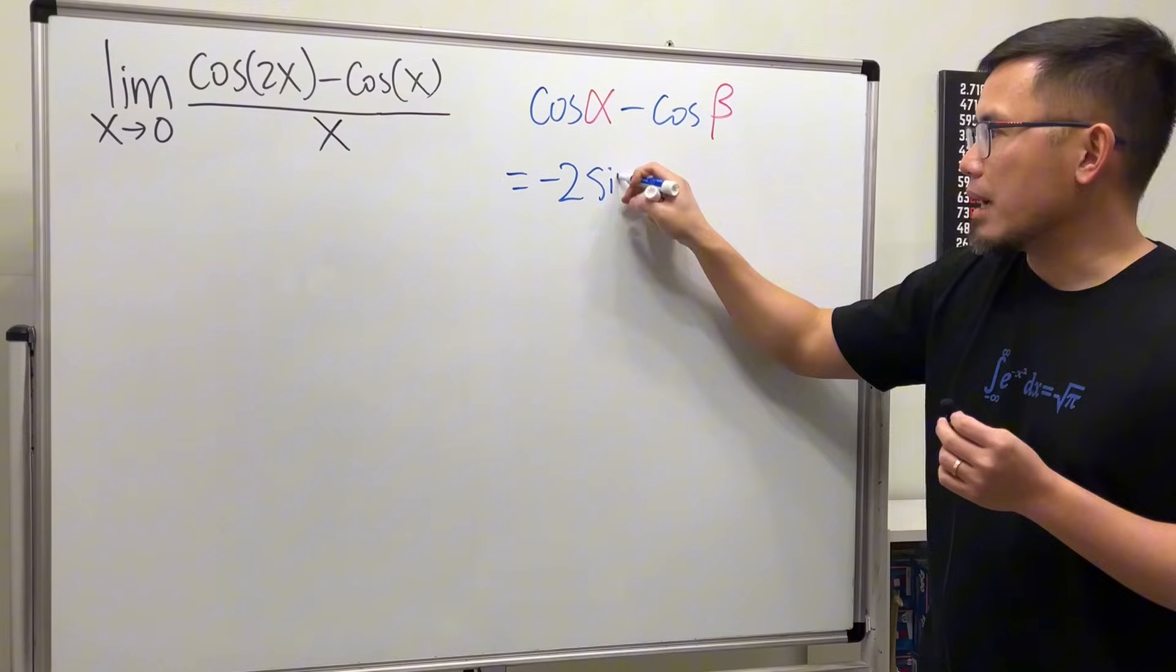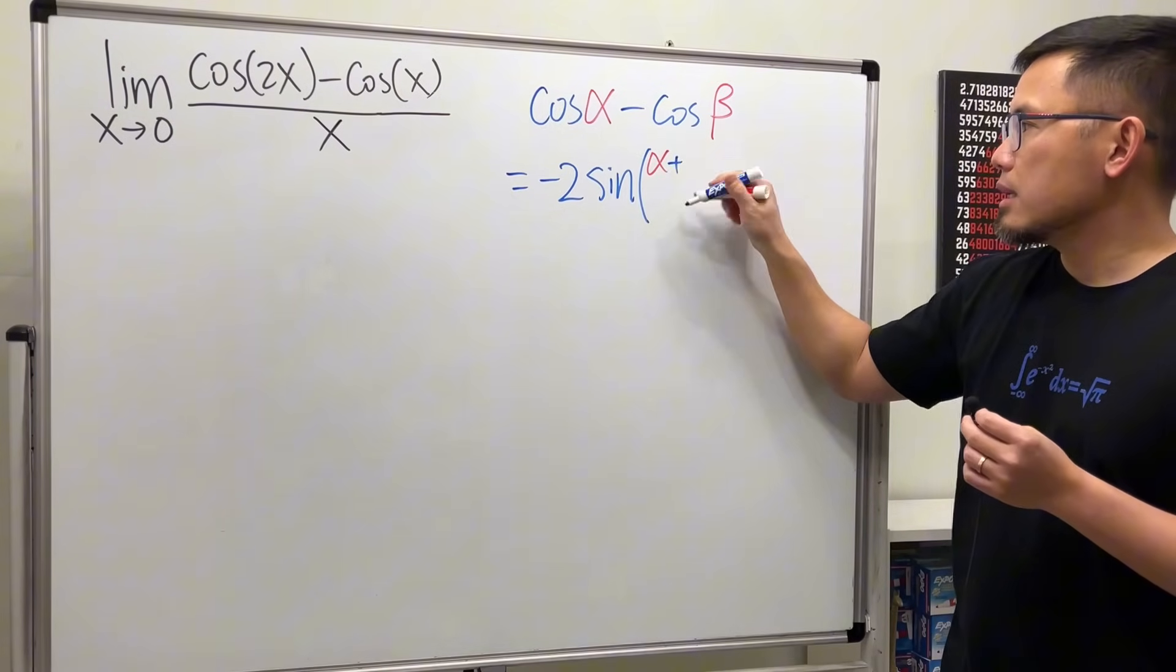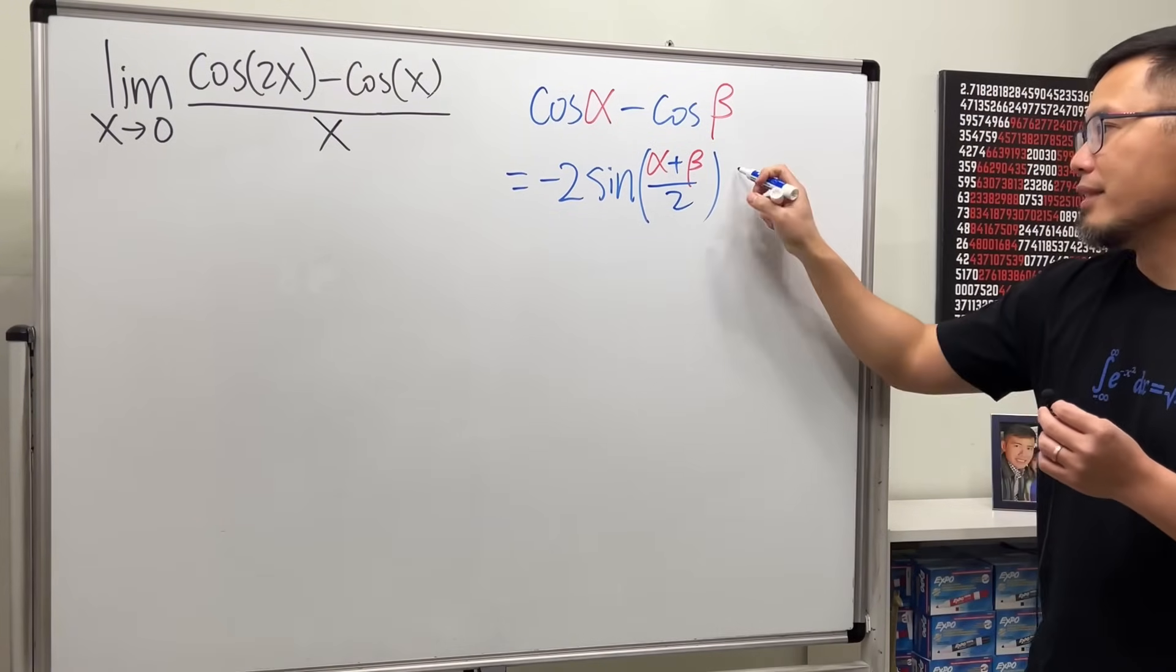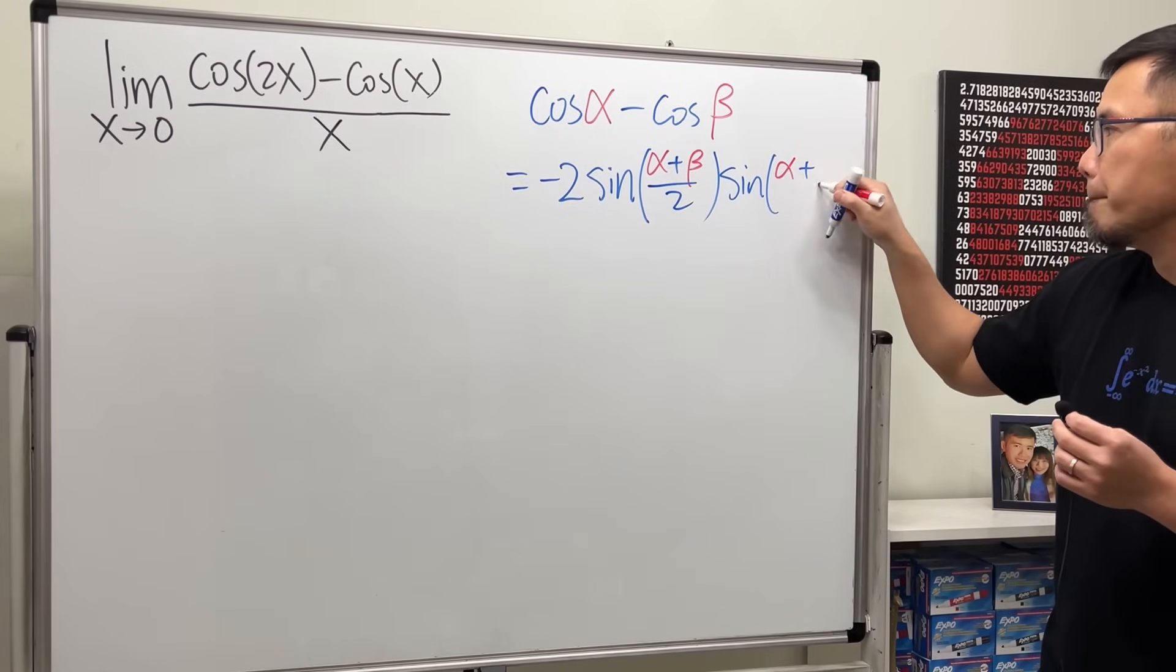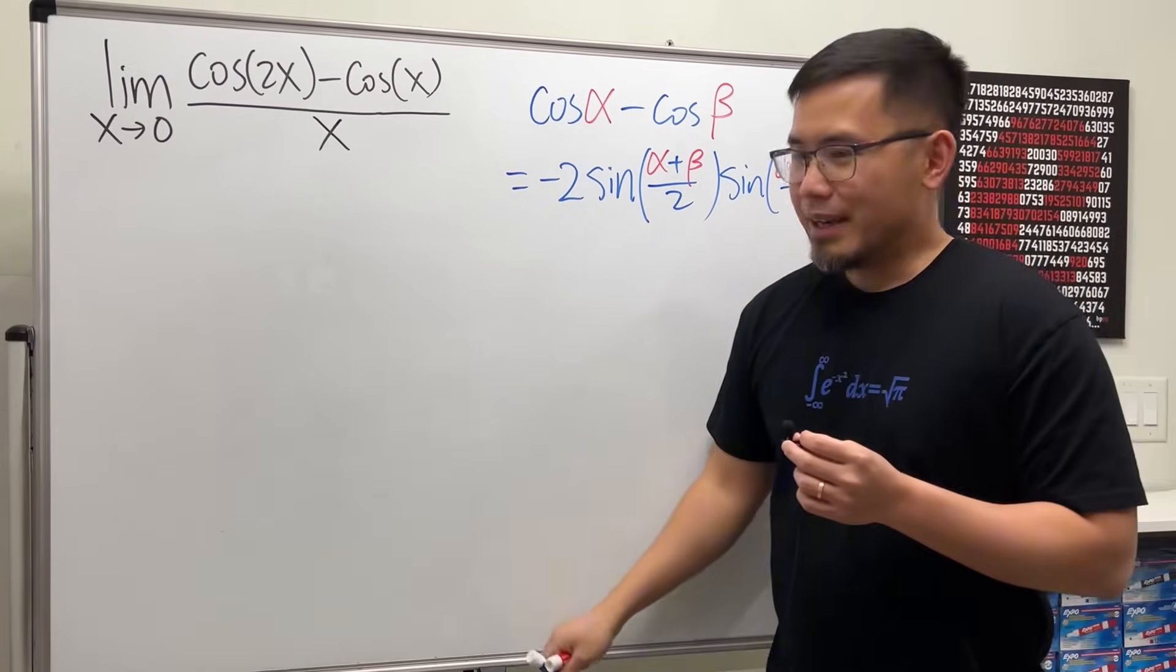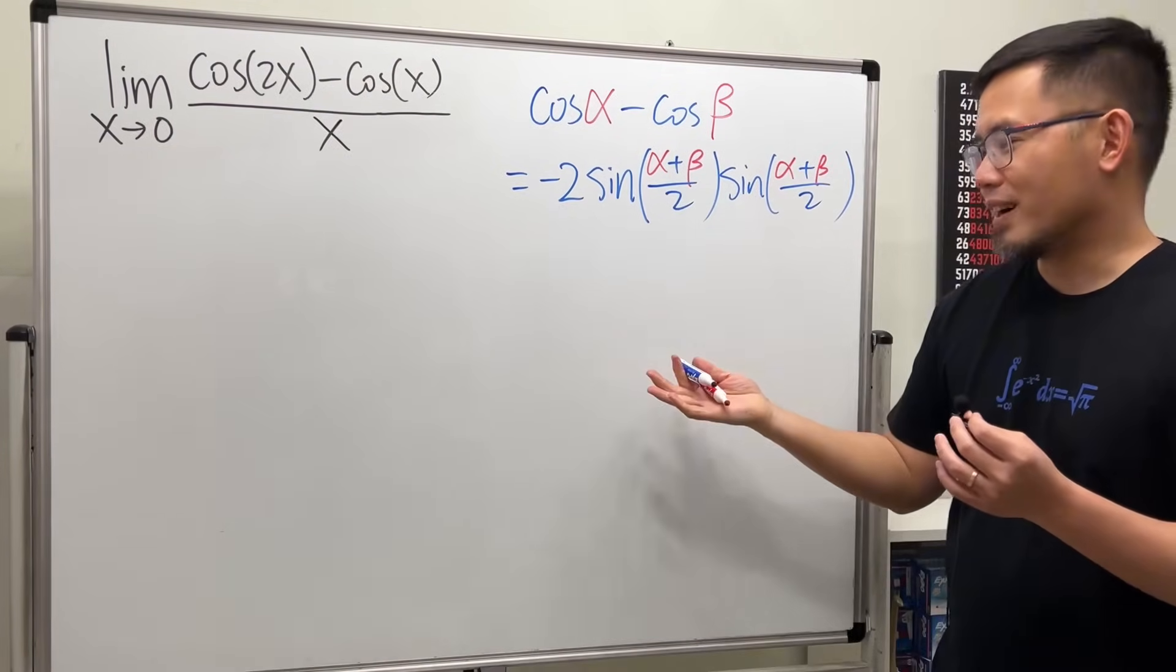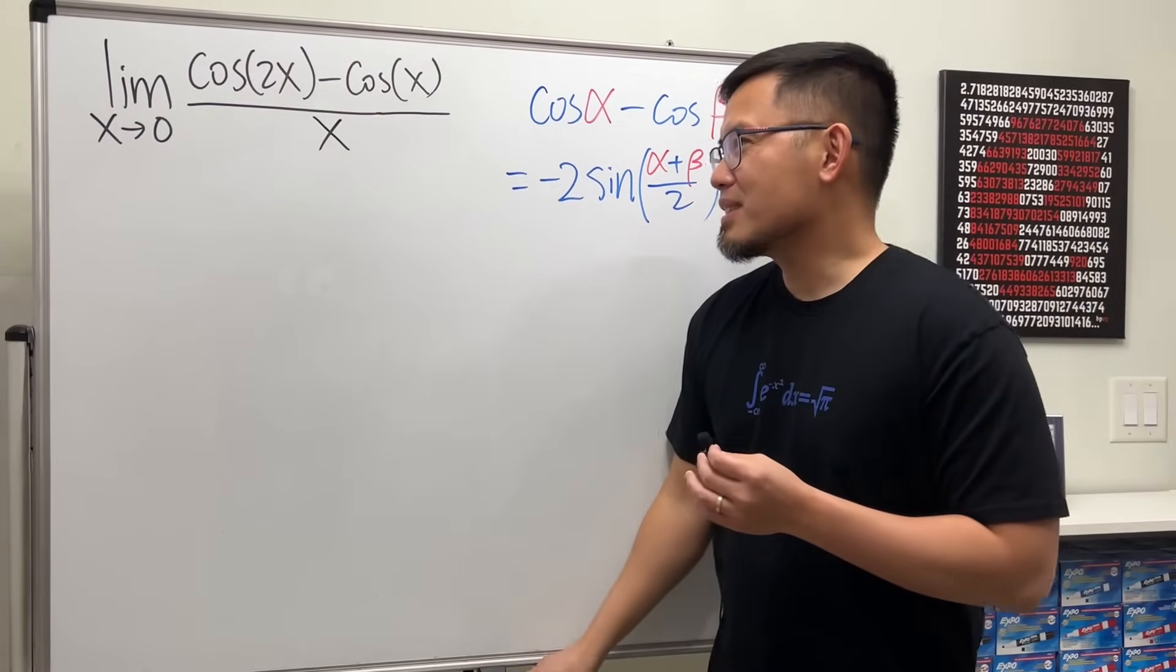Negative 2 times sine of alpha plus beta over 2, and then multiply by another sine here. And this time you have alpha minus beta over 2. I know, hopefully this identity will be provided on your final exam. Okay, so let's see. We will have the limit as x approaching zero, and we have the x on the bottom.